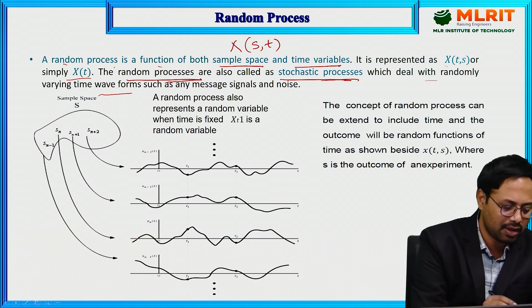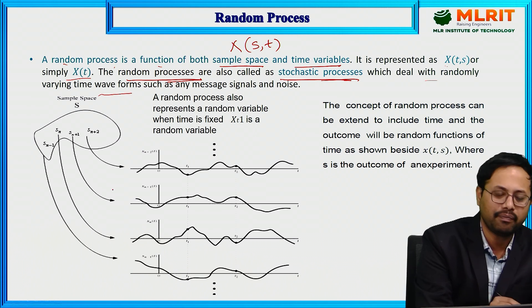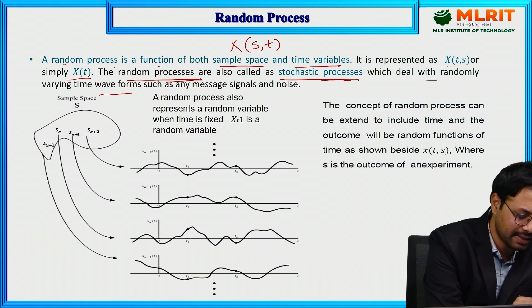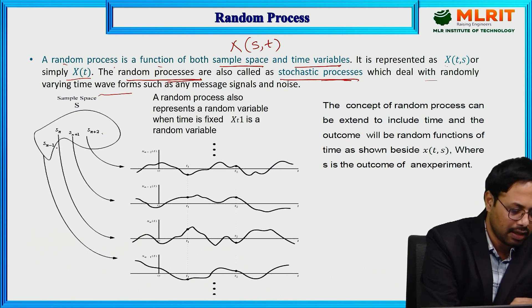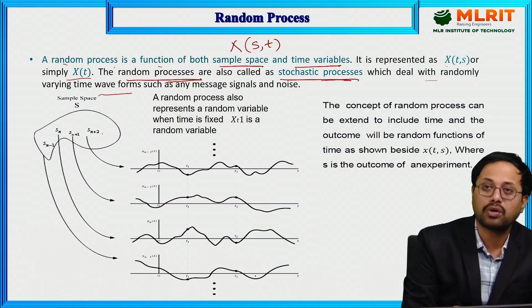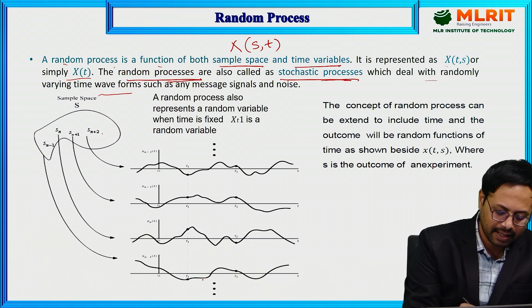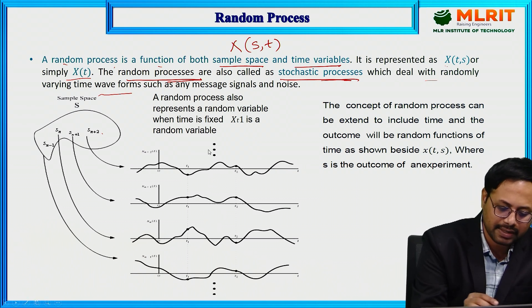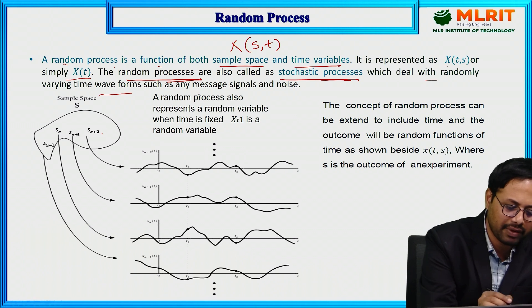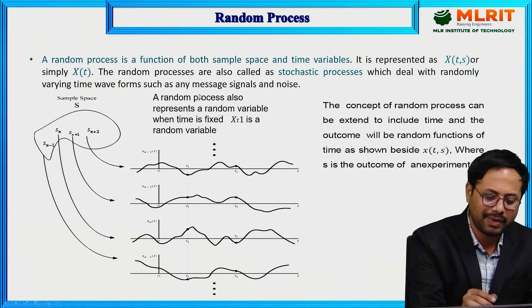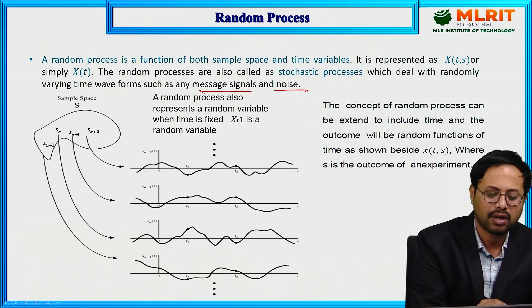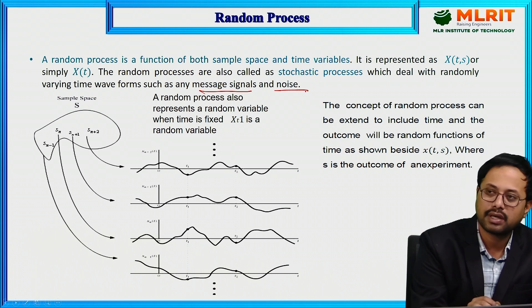In the Venn diagram, we have a sample space of N events. Each sampling point represents one random process, or it is a waveform representation. Each one has a different scenario, a different representation of the waveform. Examples of such waveforms include message signals or noise, or message signals with noise.